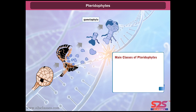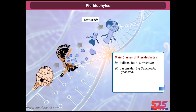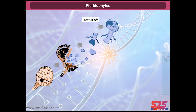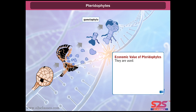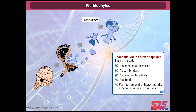Main classes of pteridophytes: Psilopsida — example Psilotum; Lycopsida — example Selaginella and Lycopodium; Sphenopsida — example Equisetum; Pteropsida — examples Dryopteris, Pteris, Adiantum, etc. Economic value of pteridophytes: they are used for medicinal purposes, as soil binders, as ornamental plants, for food, and for the removal of heavy metals, especially arsenic, from the soil.